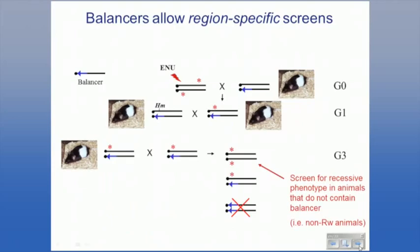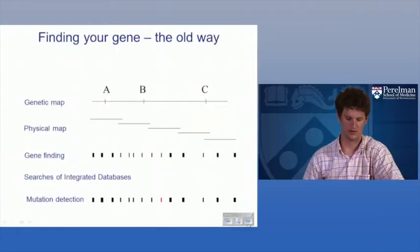Once you intercross the balanced mutant heterozygotes, you pull out individuals that either have the dominant rump white marker — those are heterozygotes for your mutant region — or non-rump-white individuals, which are homozygous for whatever mutations were present in the mutagenized chromosome from your particular balanced region. You can then screen those animals in detail for phenotypes.